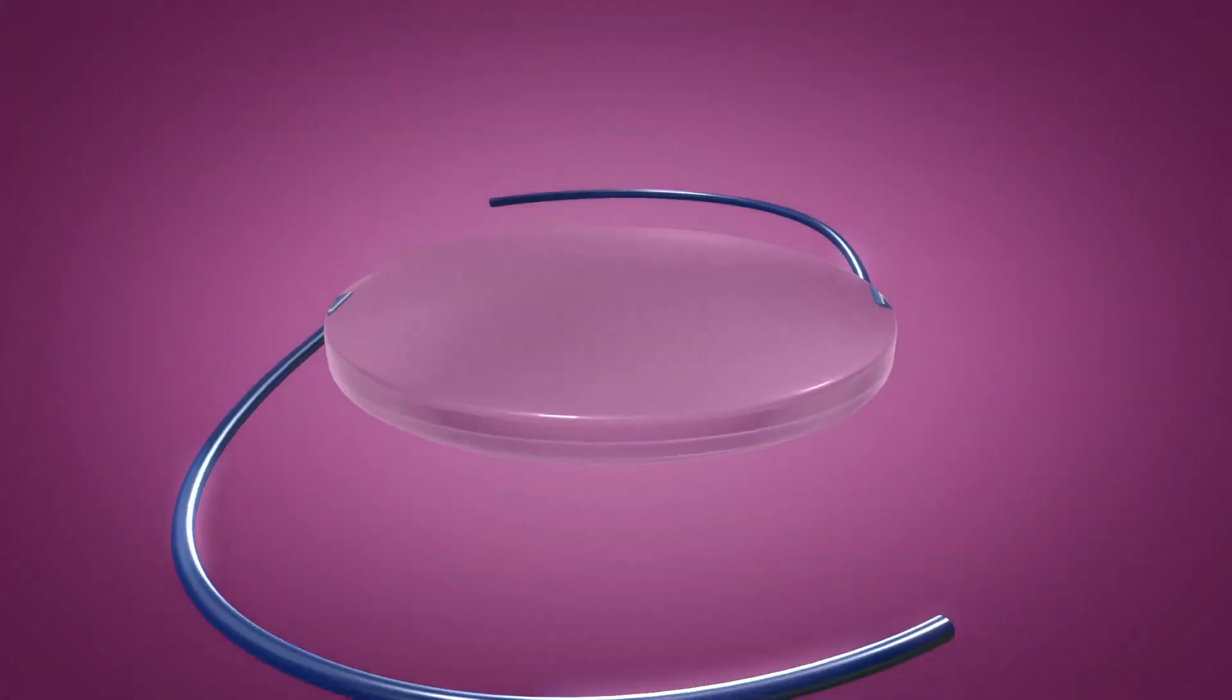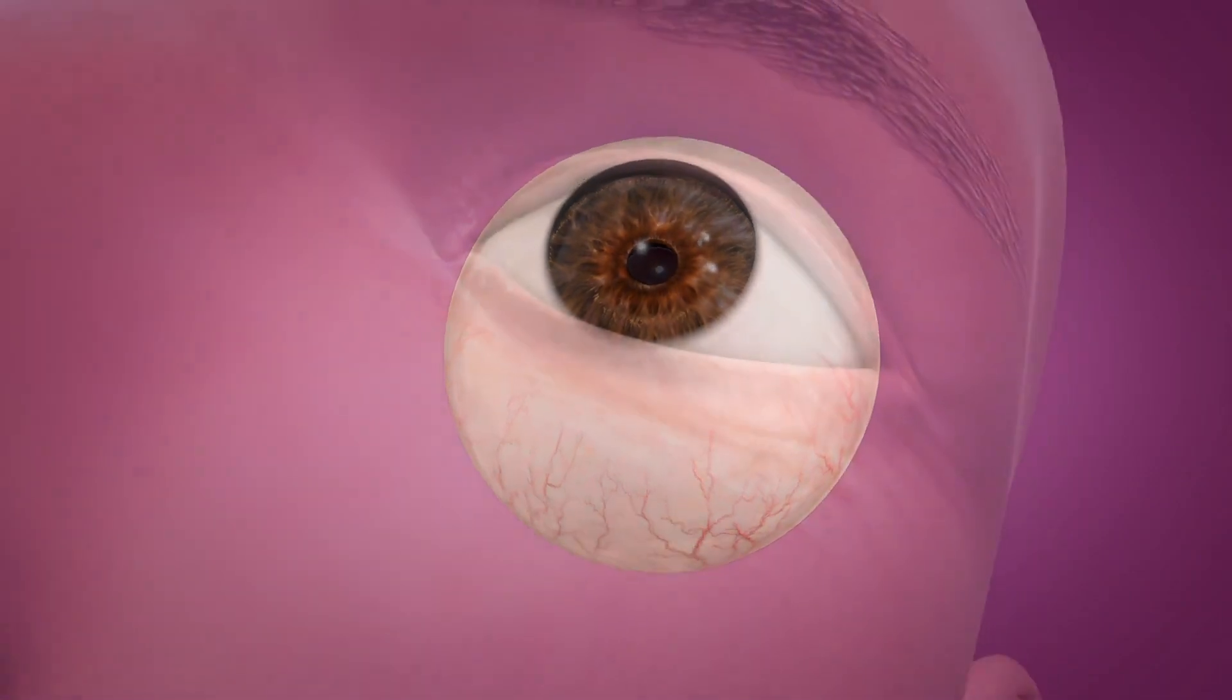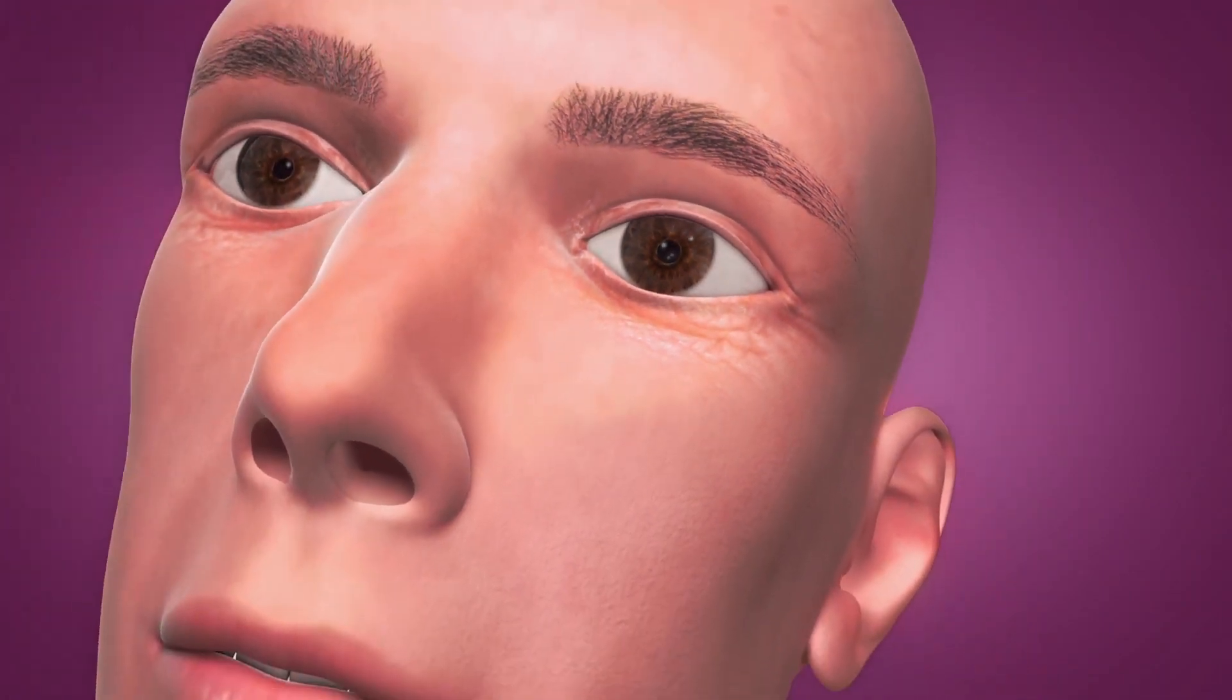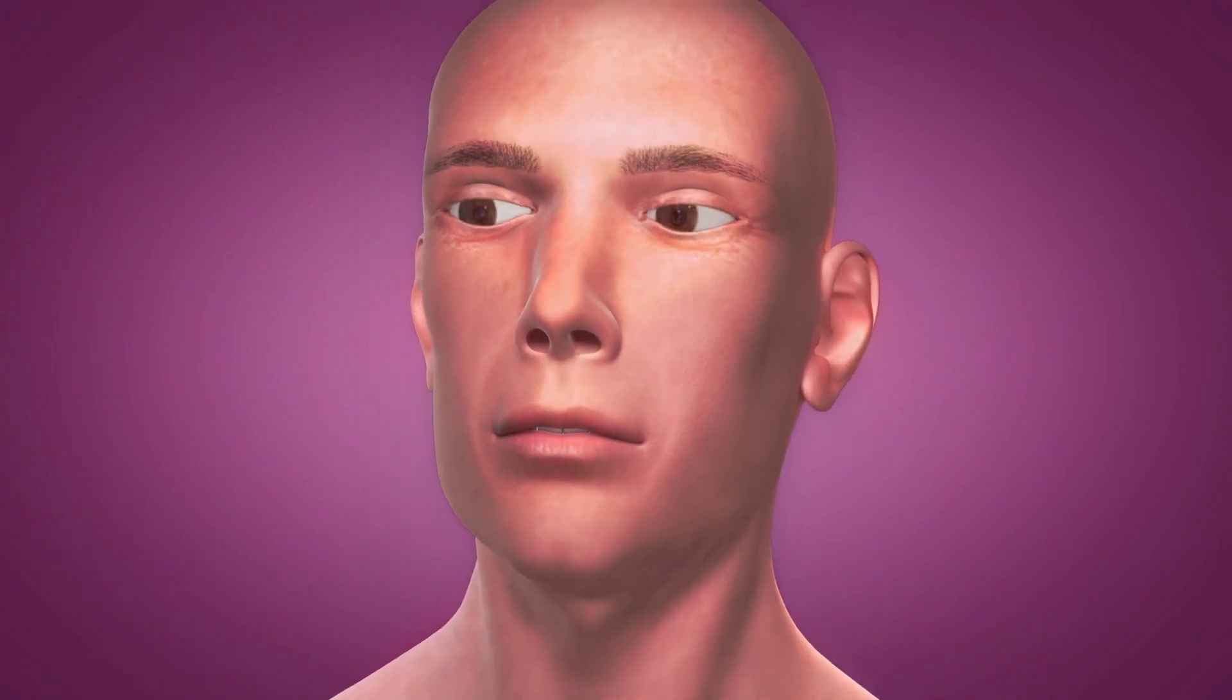RxCite's Light Adjustable Lens enables cataract surgeons to precisely reshape the lens based on the exact amount of visual correction and optimization needed to achieve the desired vision after cataract surgery.